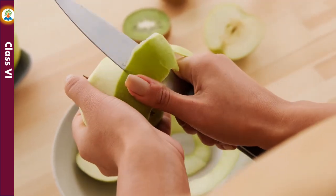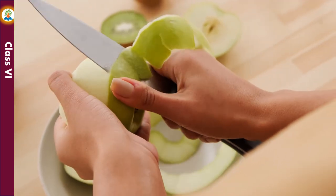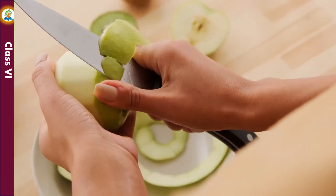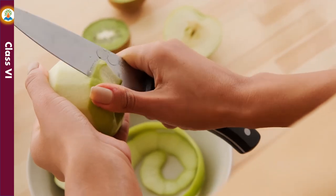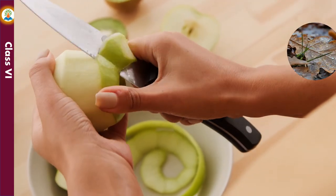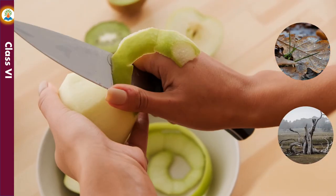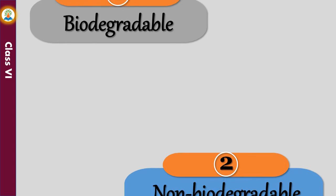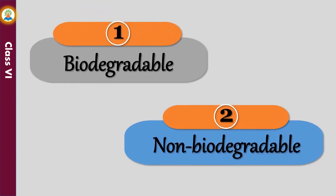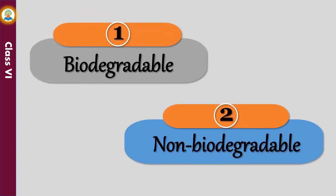Vegetable and fruit peels, waste papers, and wrappers of food items are different types of solid waste that are produced. Fallen leaves and dead plants also add to it. Solid waste is broadly classified into two types: biodegradable and non-biodegradable waste.